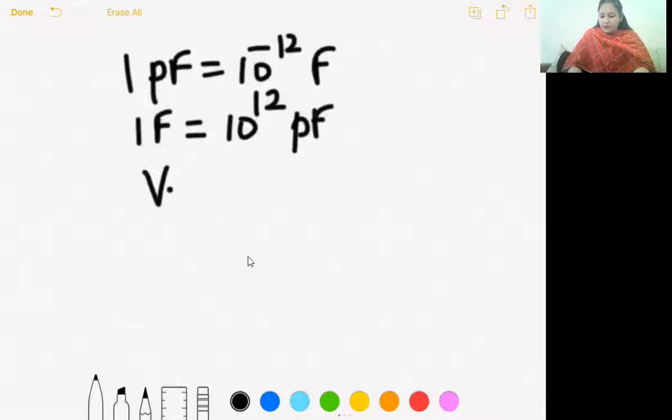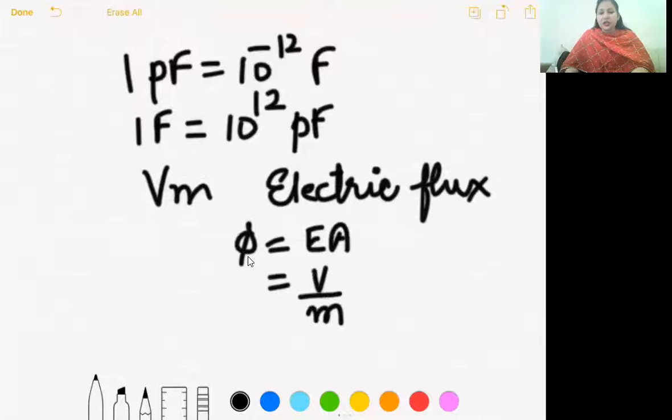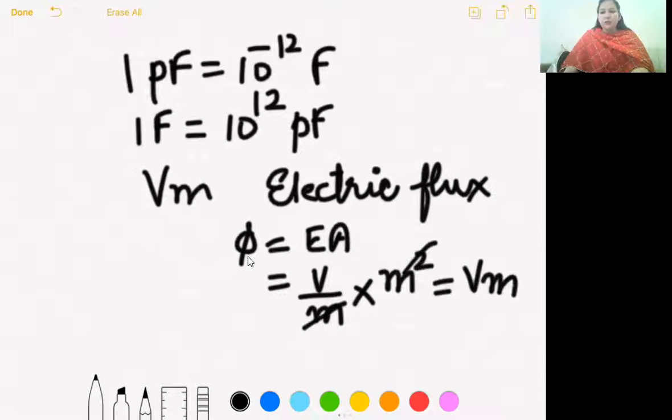Second question was the physical quantity having the unit volt meter. Volt meter is a device also and volt meter is a unit also. Which quantity is having the unit volt into meter? That was electric flux. Electric flux is electric field into area. If we write electric field in terms of potential difference, unit is volt per meter, area is meter square, so it comes out to be volt into meter.